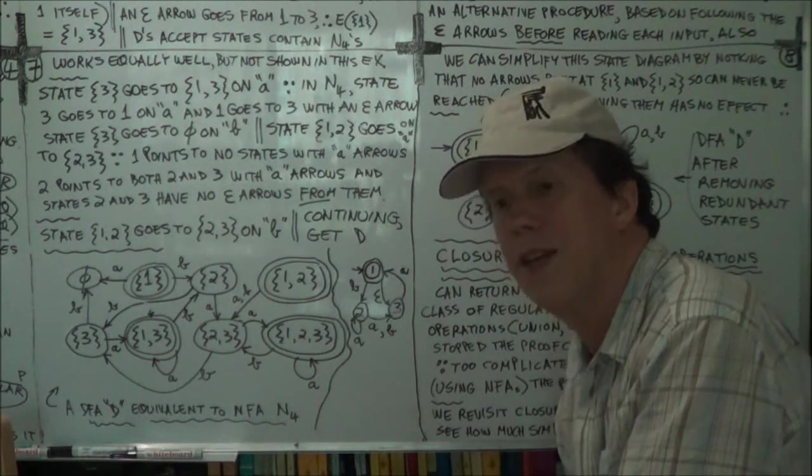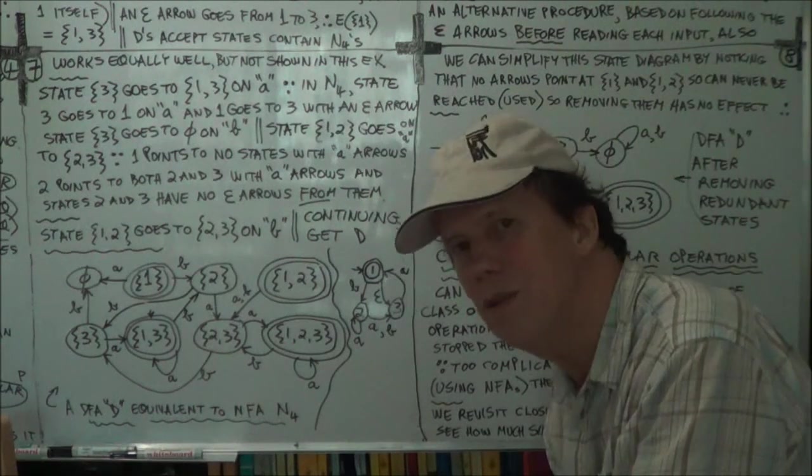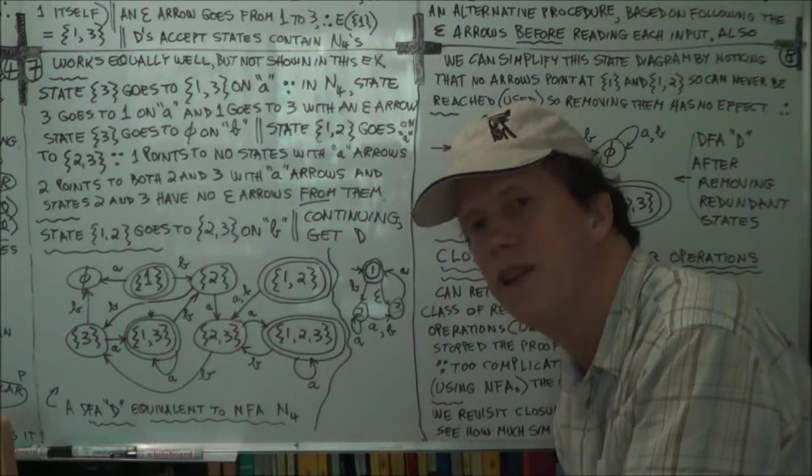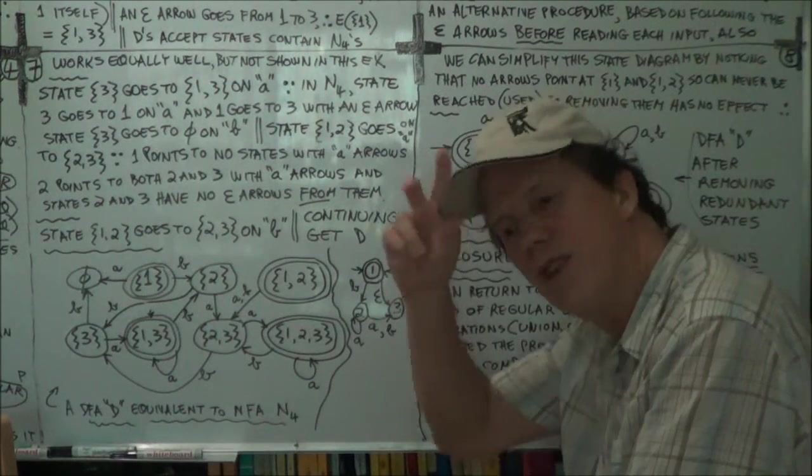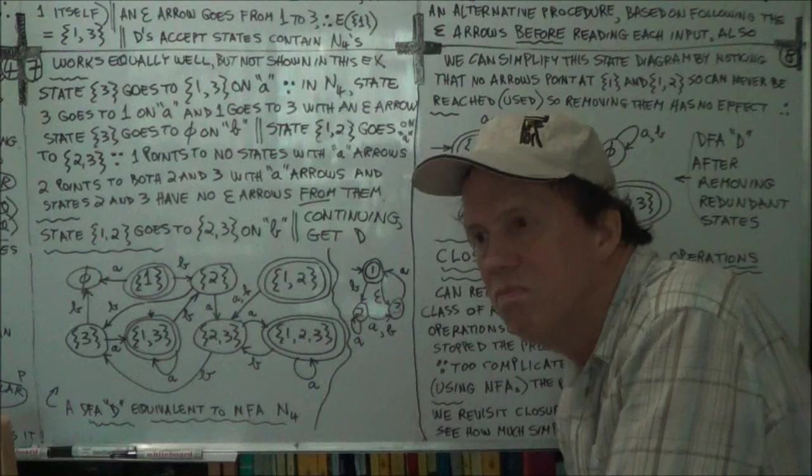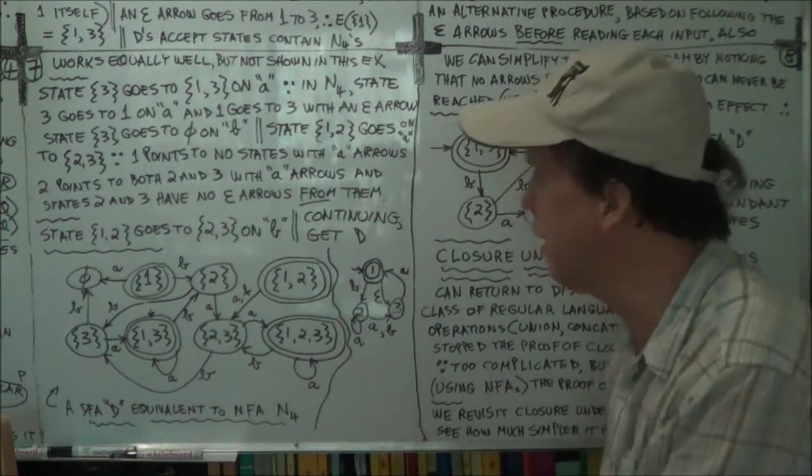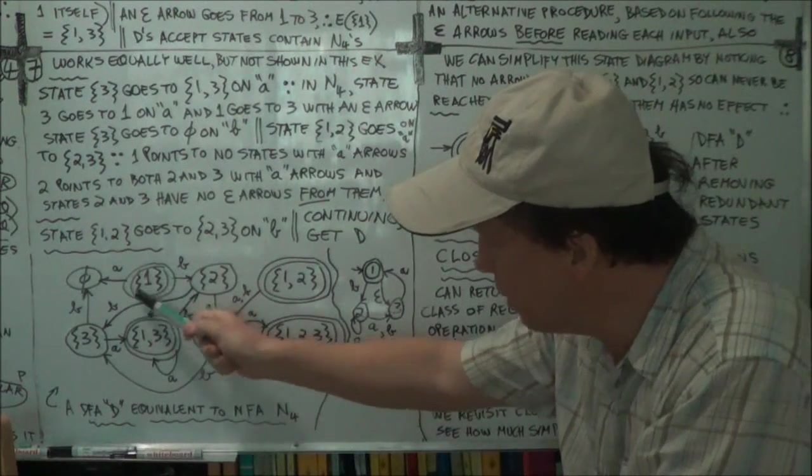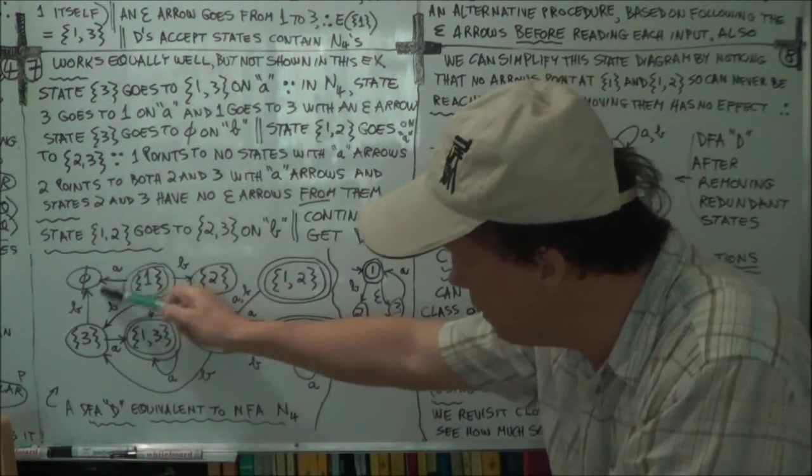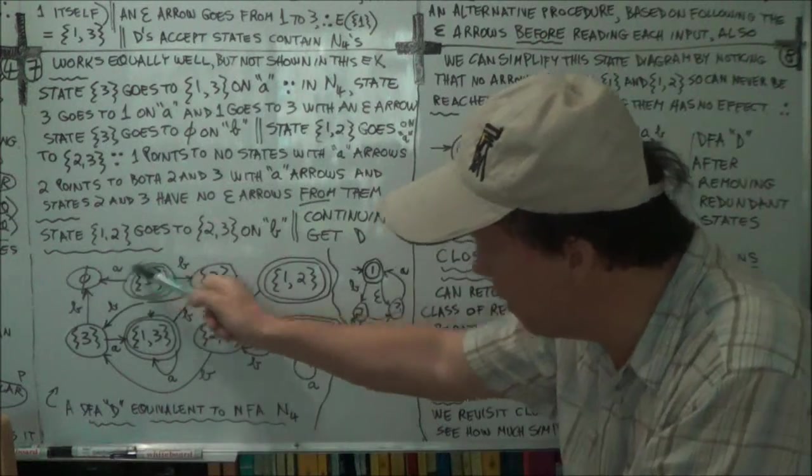I mean, think about it. If there's no transition to it, it never gets used, right? Now, have a look. This one here, there's no arrow pointing to it, so we can kill this one, and hence this. That will disappear.